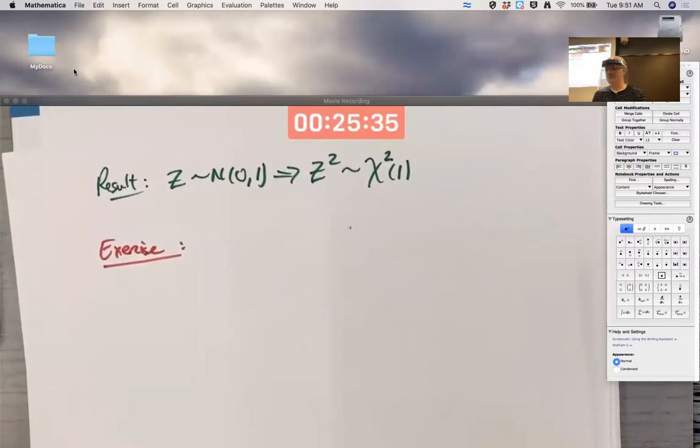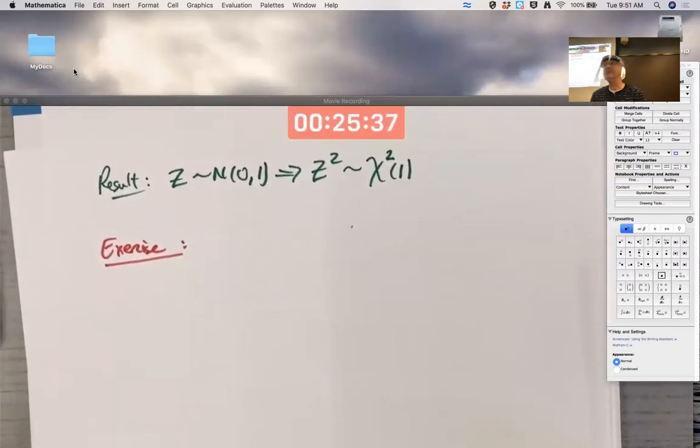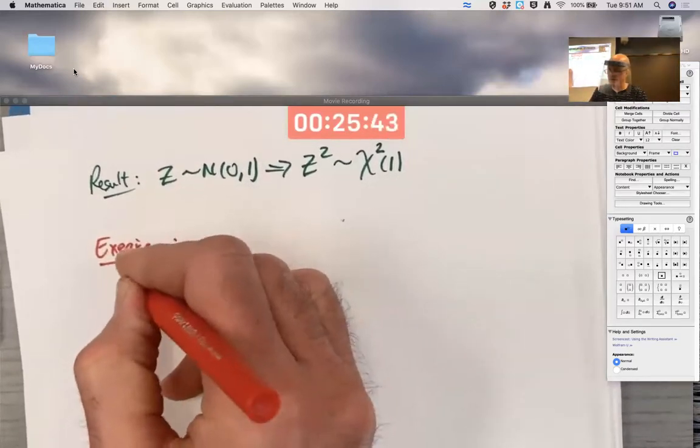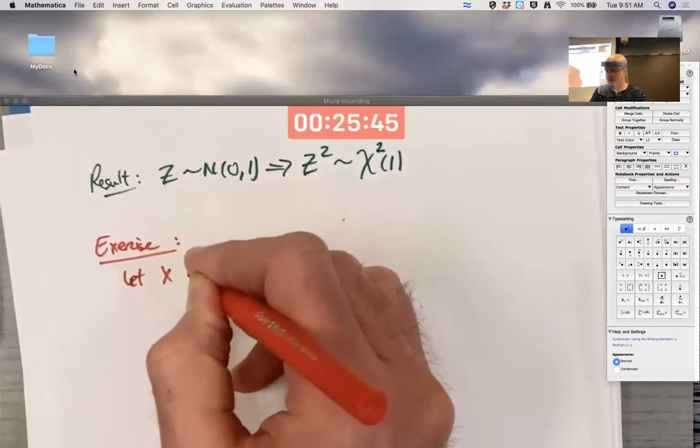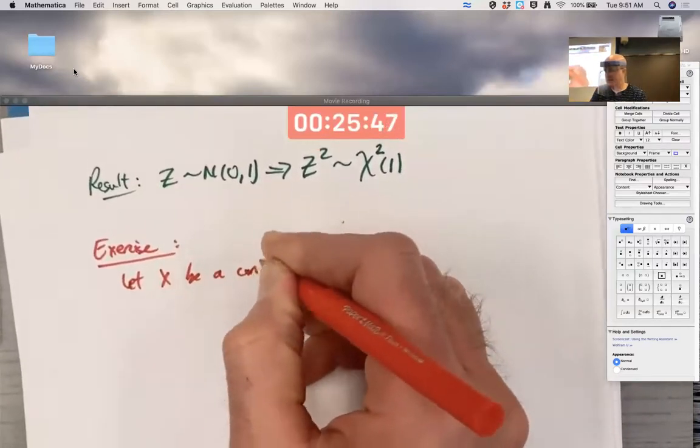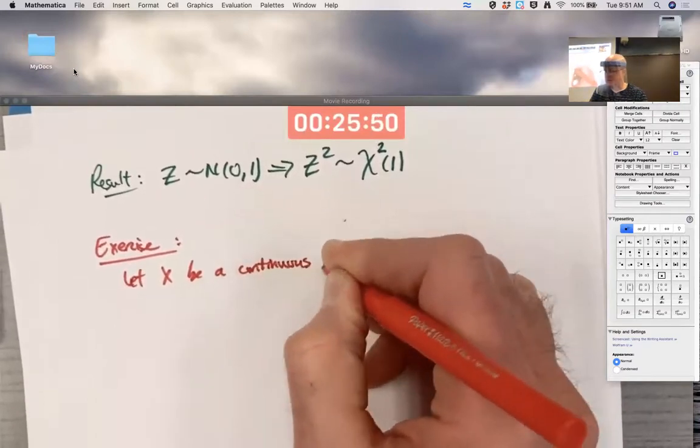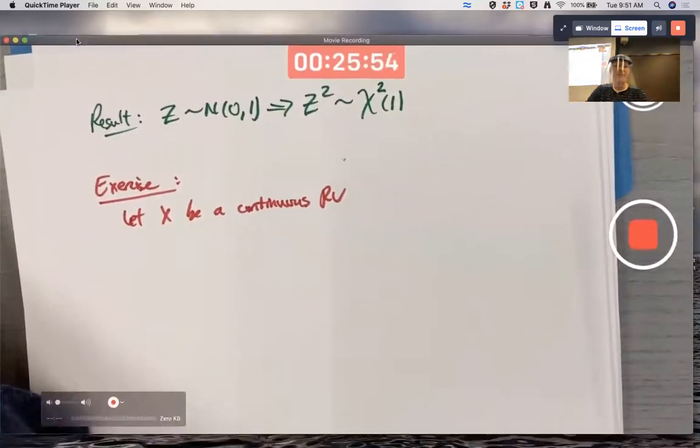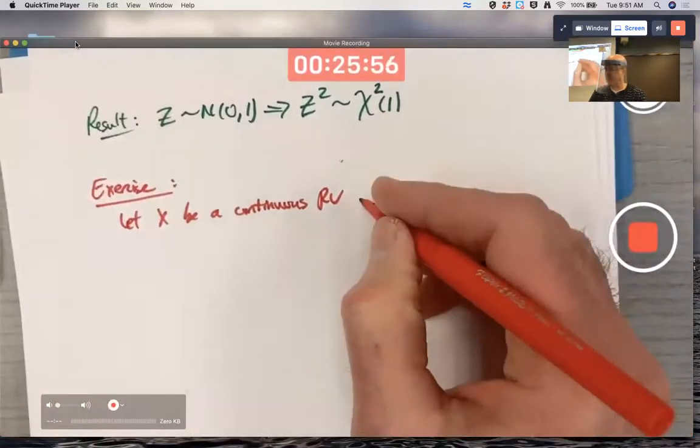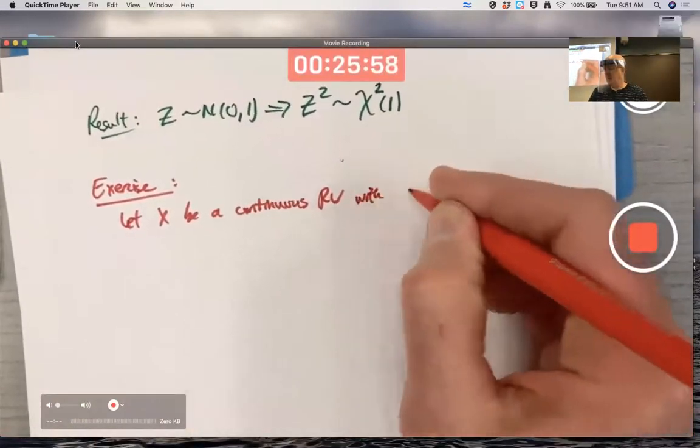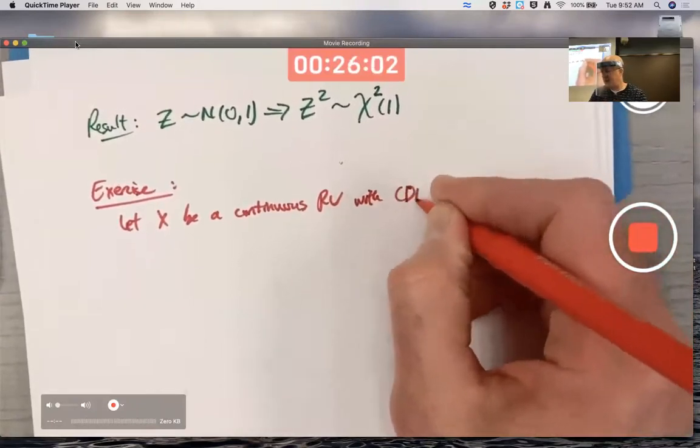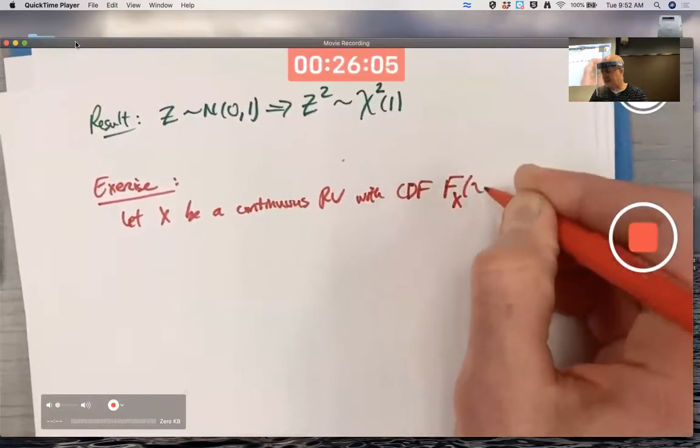This exercise or example is going to be important for simulation. Let X be a continuous random variable with CDF capital F sub X of little x.